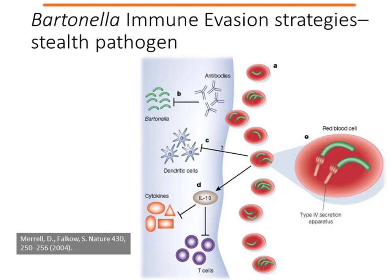Part of being a stealth pathogen is the ability to evade immune responses. Bartonella colonizes an unknown niche when it enters the bloodstream and seeds bacteria that infect and survive inside red blood cells. Host antibodies have no effect on intraerythrocytic bacteria, but they prevent new waves of erythrocytic parasitism. Intracellular bacteria have been proposed to affect dendritic cell maturation, and have been shown to inhibit cytokine production and T-cell proliferation by inducing interleukin-10, an immunosuppressive cytokine. A type IV secretion system is essential for establishing persistent intraerythrocytic infection.